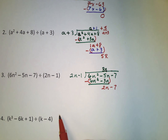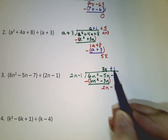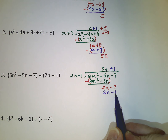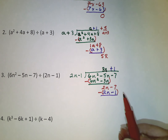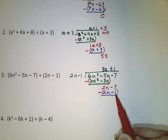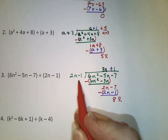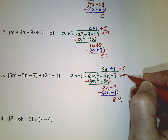Keep dividing. What do we multiply times 2n to get 2n? That's a positive 1, so I put plus 1 up here. Multiply that positive 1 times both terms of the divisor. Subtract: 2n minus 2n cancels out, and negative 7 subtract negative 1 is the same as negative 7 plus 1, giving negative 8. Nothing else to bring down, so that's our remainder. Since it's not zero, 2n minus 1 is not a factor. Because the remainder was negative 8, we write it as plus negative 8 over (2n minus 1), which is plus 8 over (2n minus 1).